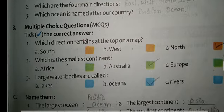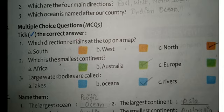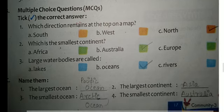Next, multiple choice questions. Question number 1: Which direction remains at the top on a map? When we look at a map, which direction is at the top? The answer is North. Question number 2: Which is the smallest continent? The smallest continent is Australia.